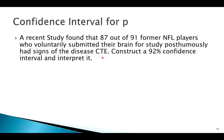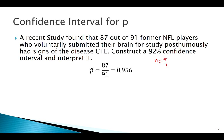We want to make a 92% confidence interval and think about the interpretation for P. First, we want to check: is our sample size big enough? Do we meet the criteria? N is 91, and 91 times 0.956 — that's a very high P-hat — should meet our criteria.